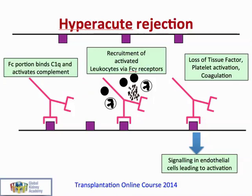One of the main reasons to monitor for antibody development is that performing a transplant in the presence of preformed antibodies is extremely likely to lead to hyperacute rejection. When the clamps come off the donor kidney and the graft is reperfused, antibodies from the recipient serum will immediately bind the endothelium of the donor kidney, activating complement, other leukocytes, and inflammatory and coagulation pathways, often leading to immediate rejection of the graft.